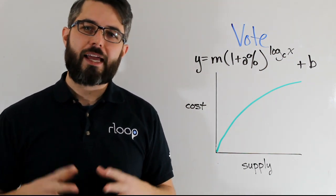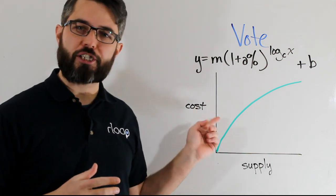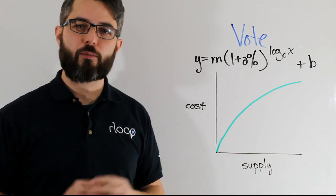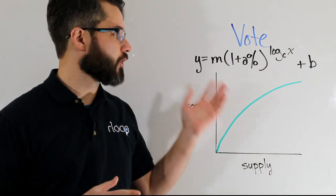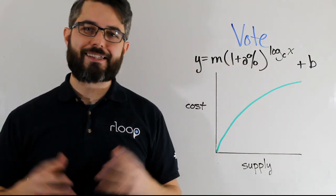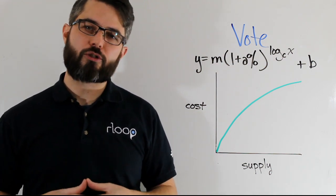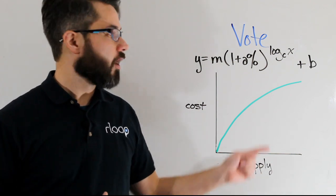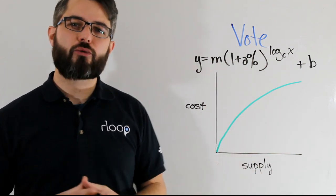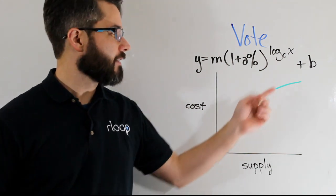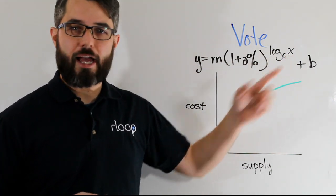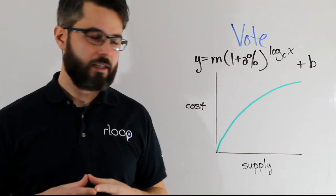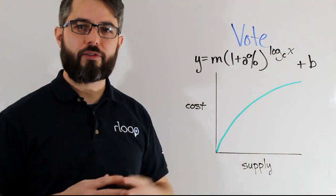So what we want to be able to do is set a cost appreciation for the token based on some factor of the supply increasing, and we can do that using Wilson Lau's equation seen here. So for example, if we wanted the cost of the token to increase by 25 percent every time that the supply doubled, we would set a in this equation to 25 percent and c, which is the base of log x here, we would set that to 2 for a doubling, and that curve would look something like this.